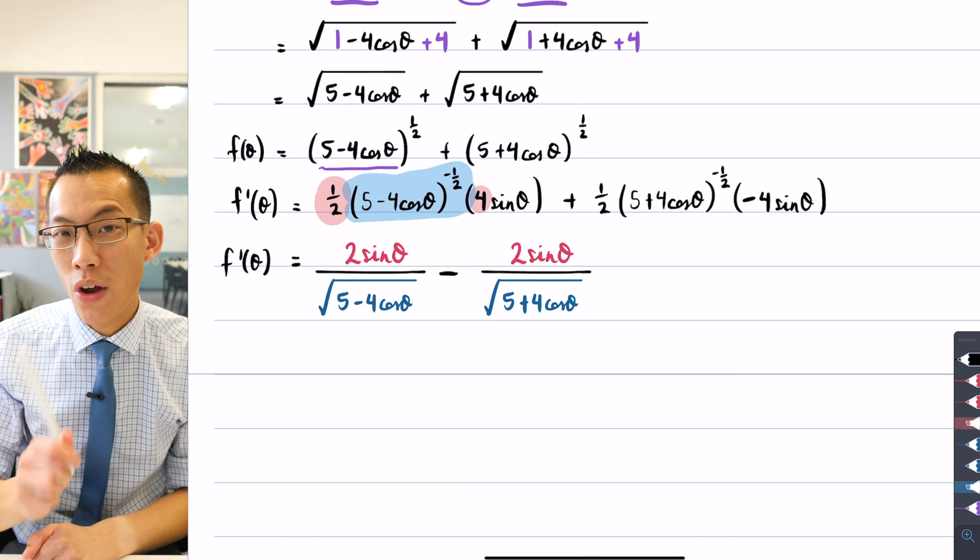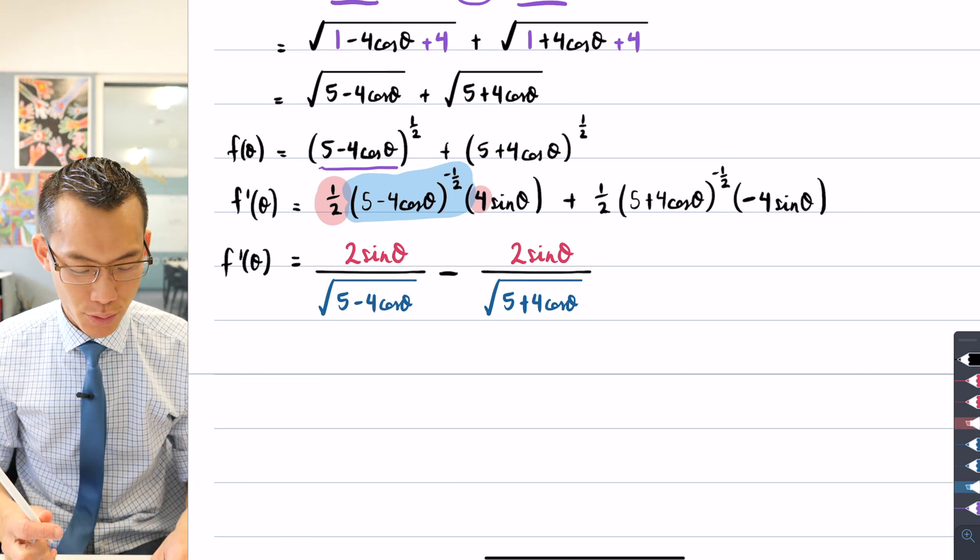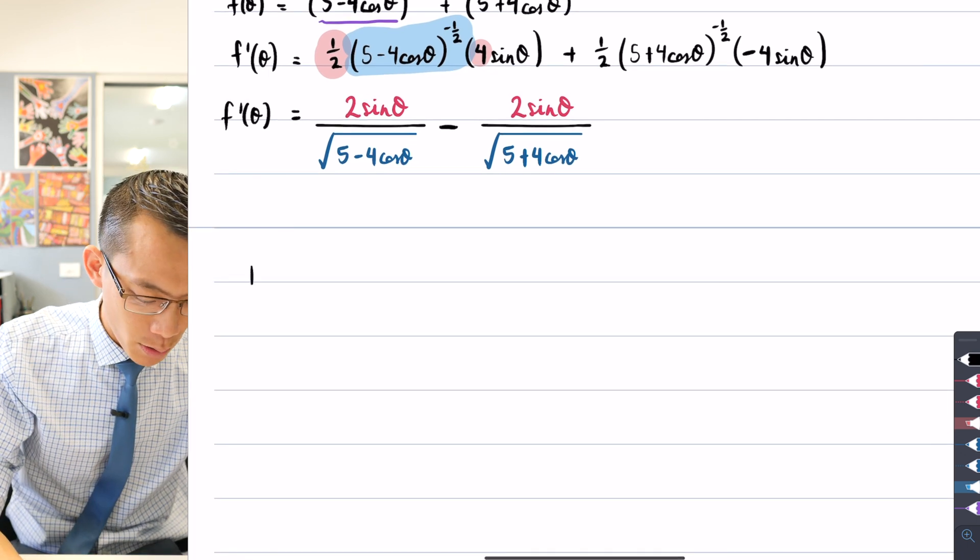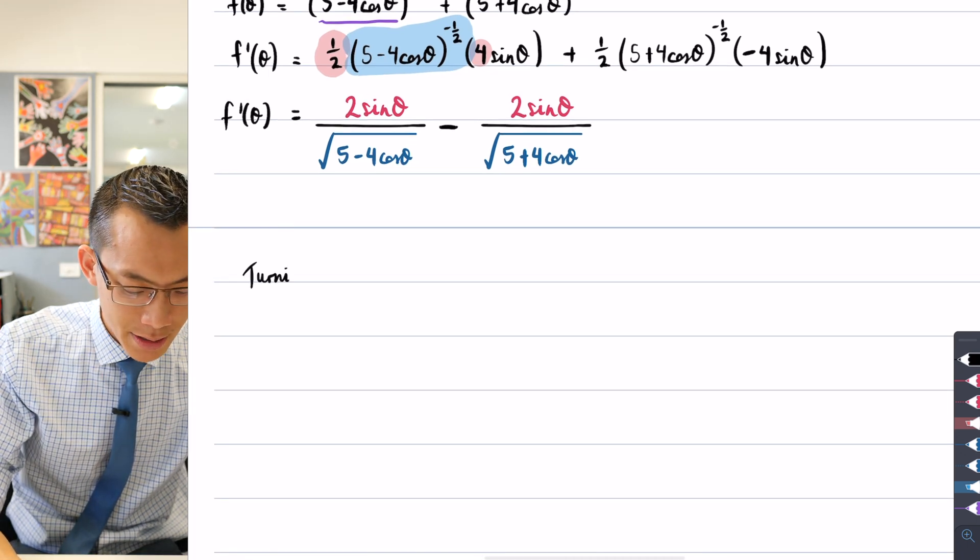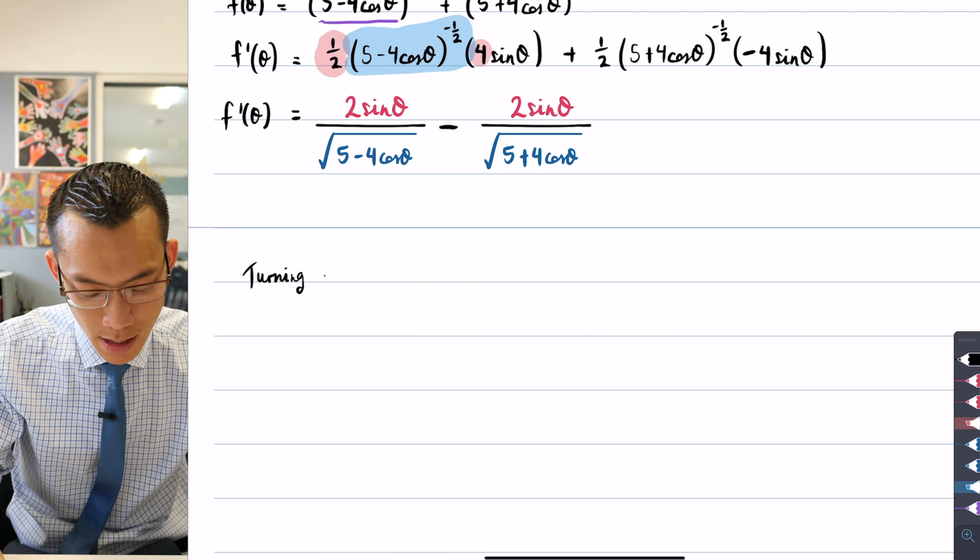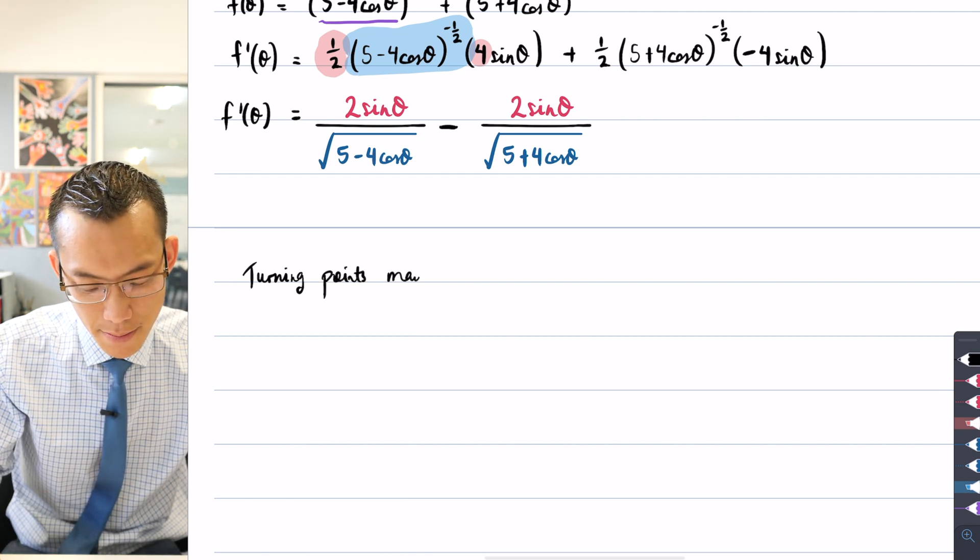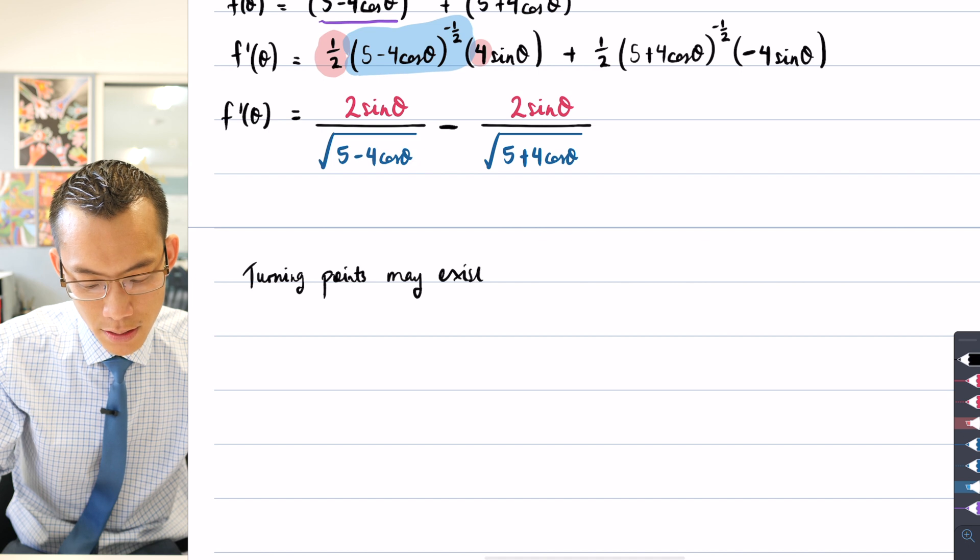What was the point of differentiating? We were looking for turning points. So turning points may exist because we're maximizing here. Turning points may exist when our derivative is zero.